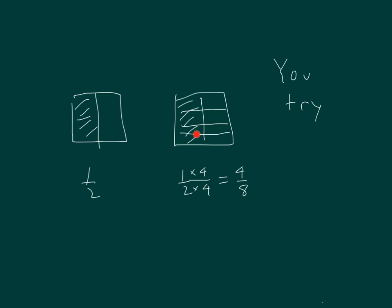Therefore, we have 1, 2, 3, 4 out of 1, 2, 3, 4, 5, 6, 7, 8. And we have 1 half times 4 in the numerator and times 4 in the denominator to be able to get 4 eighths.